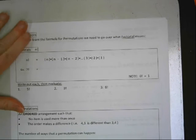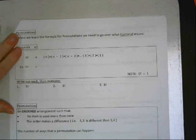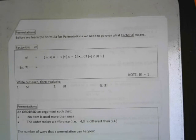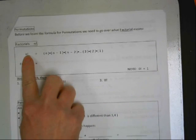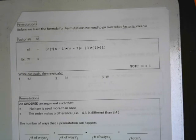All right, so then there's permutations. Permutations, it says before we learn the permutation, first we need to go over what a factorial means. Factorial is, whatever the n value is, it's that times the decreasing number next to it. So, seven times six times five times...